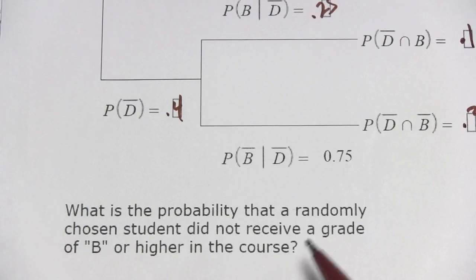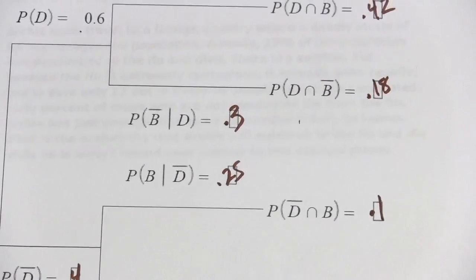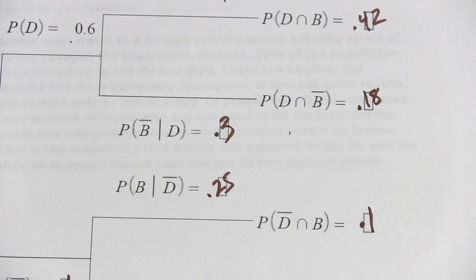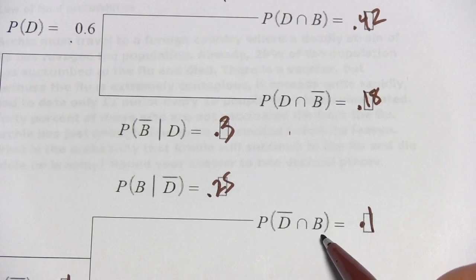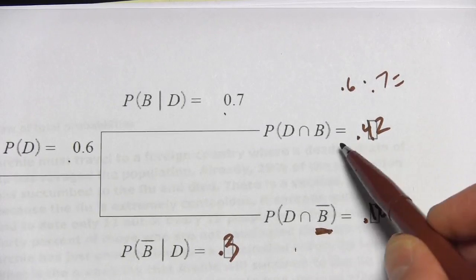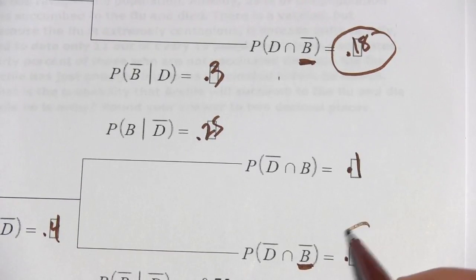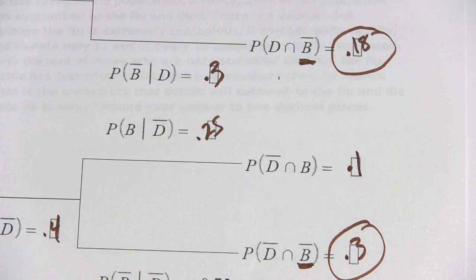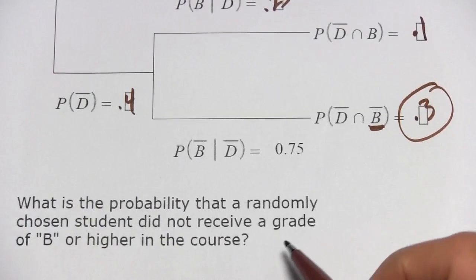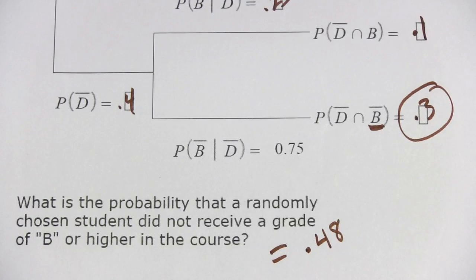Let's look at the question: what is the probability that a randomly chosen student did not receive a grade of B or higher in the course? Looking along the edge of the tree, we identify the branches where students did not receive a B or higher. We simply add those two intersection probabilities together — 0.18 plus 0.3 — and we get the answer: 0.48. So that's a little bit of work with conditional probability and tree diagrams.